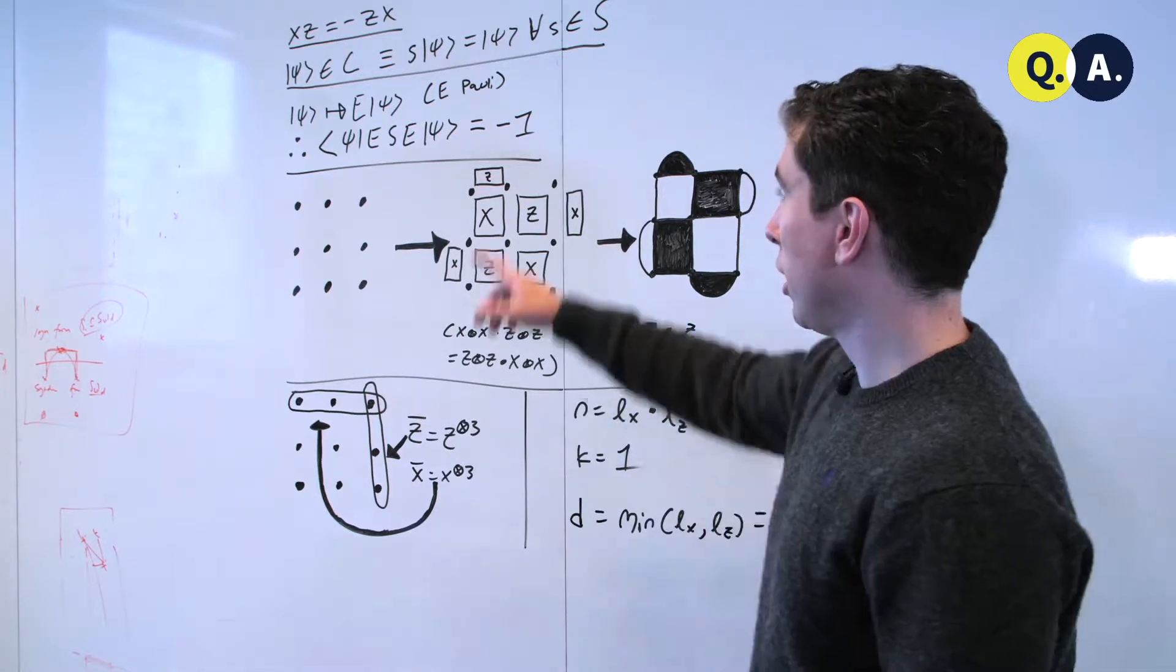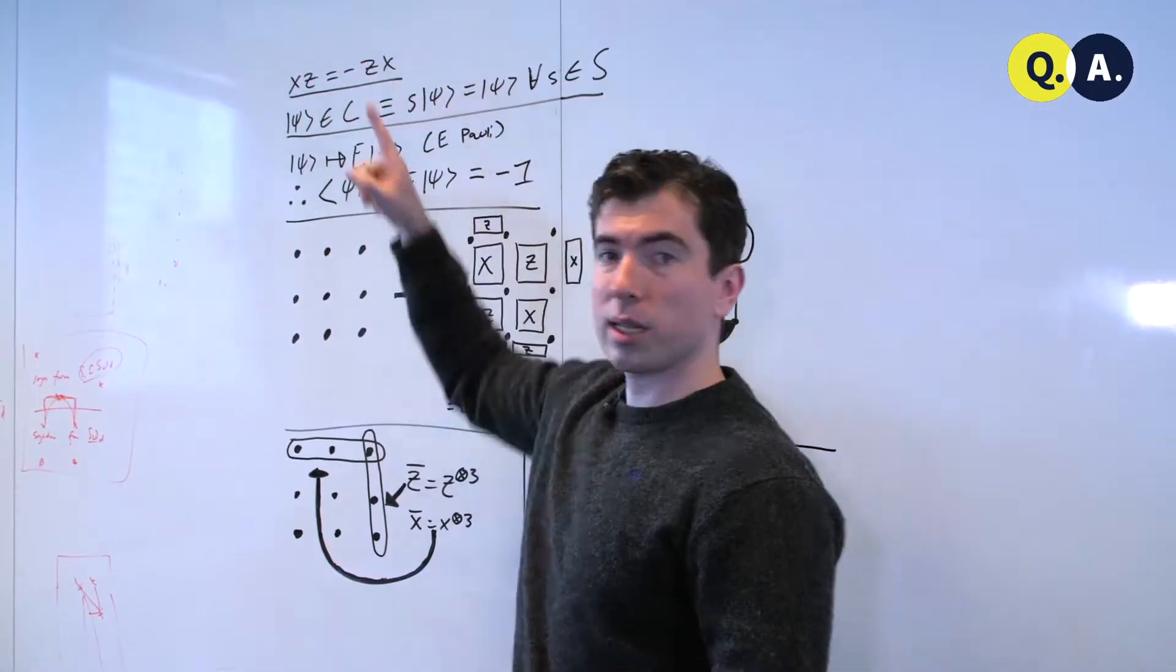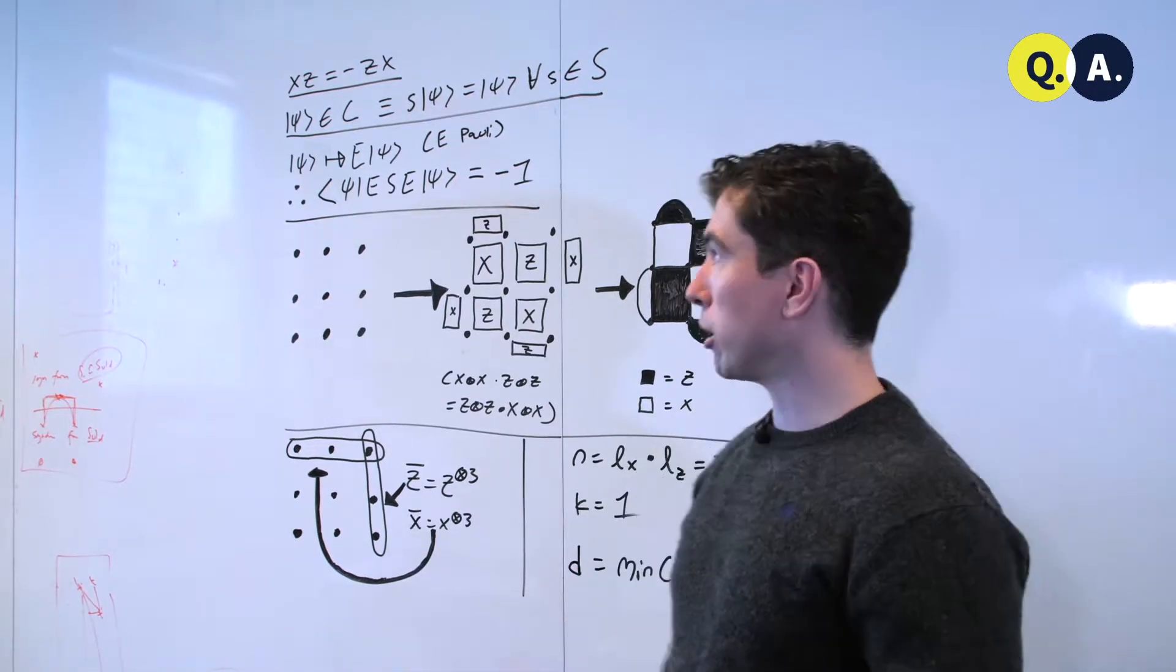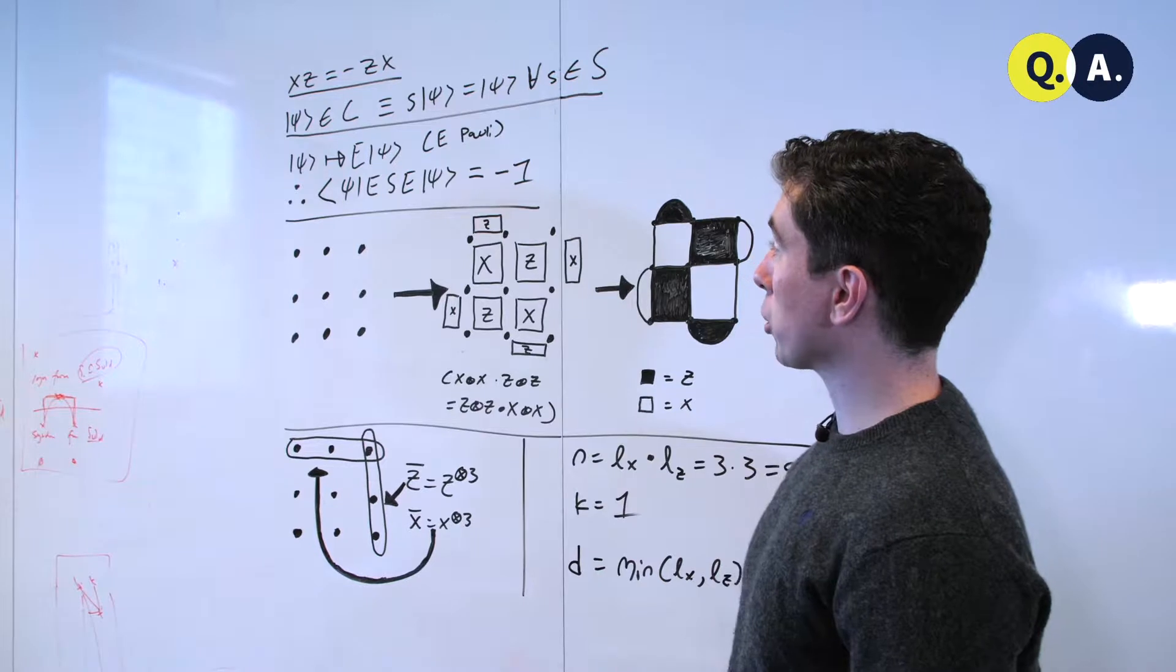To start from the very basics, let's recall that x times z is equal to minus z times x, where x and z are the 2 by 2 Pauli matrices that we've been discussing throughout the course.